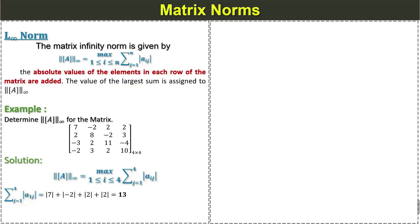First we have the L-infinity norm. The matrix infinity norm is given by this formula. This formula works as follows: we take the absolute values of the elements in each row of the matrix and add them up. First we take the absolute of each value in each row, then we add up all values in that row, and then we pick the largest value — that will be assigned to the infinity norm.